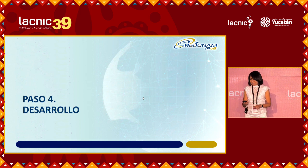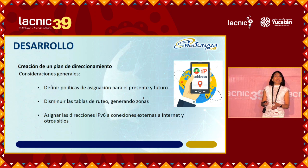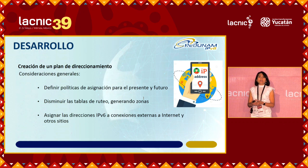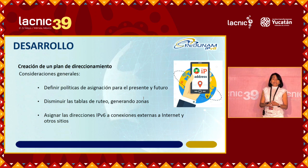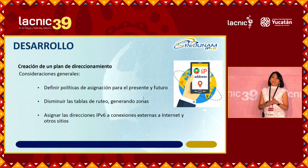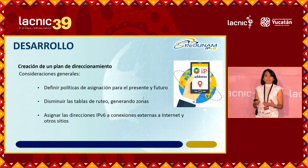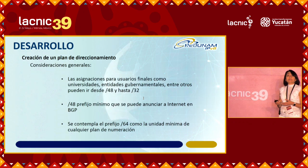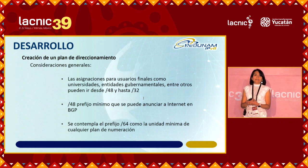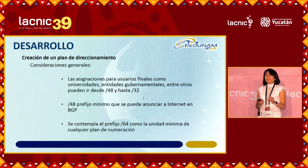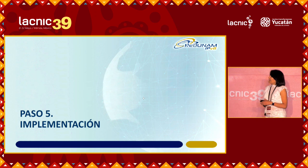Step four is to start establishing policies for address assignment, which relates to the numbering plan. We need to determine what prefixes have been assigned based on the number of devices and our plan, and how we are going to assign addresses not just to local networks but also to links and device administration. It is very important for teams to determine the general guidelines and minimum considerations, because in most cases people have no idea what a prefix /48 or /32 means, so we need to make them aware of that.